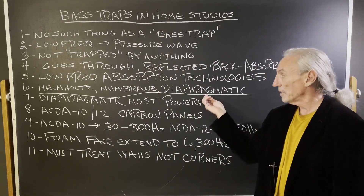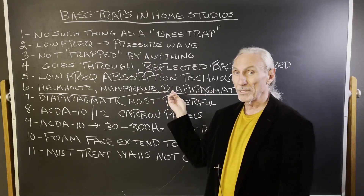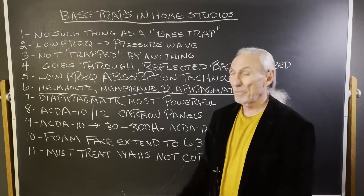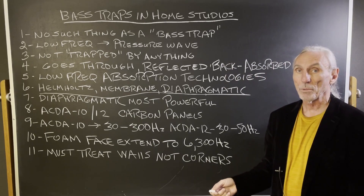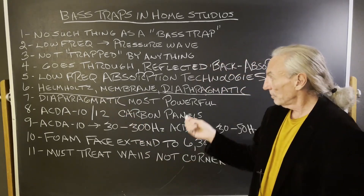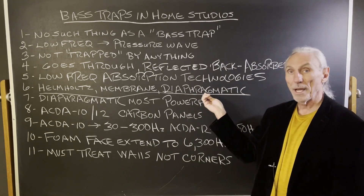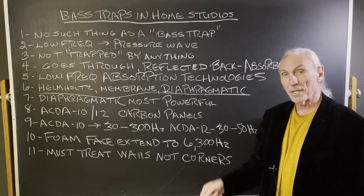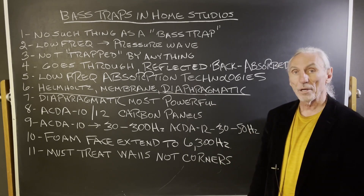We use diaphragmatic — it's the most powerful per square foot. Membrane is a cousin of diaphragmatic but doesn't achieve as much rate. And Helmholtz is very frequency specific, doesn't get a lot of absorption per square foot, and you need a lot of units. We've used Helmholtz in the past to add to our diaphragmatic database because sometimes broadband absorption doesn't get certain frequencies that well. You can come in with the Helmholtz like a notch filter and put it into the room in the analog domain.